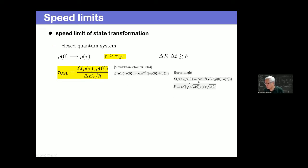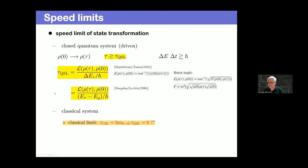This is very much like the energy-time uncertainty relation pointed out by Heisenberg. There are many ways to define distances in quantum mechanics. More recently, people found another type of quantum speed limit denominated by the mean energy value at final time minus ground state energy. I'm interested in classical systems. If you naively take the ℏ→0 limit, this quantum speed limit goes to zero, so you might think it is a purely quantum mechanical property and no useful classical speed limit exists.